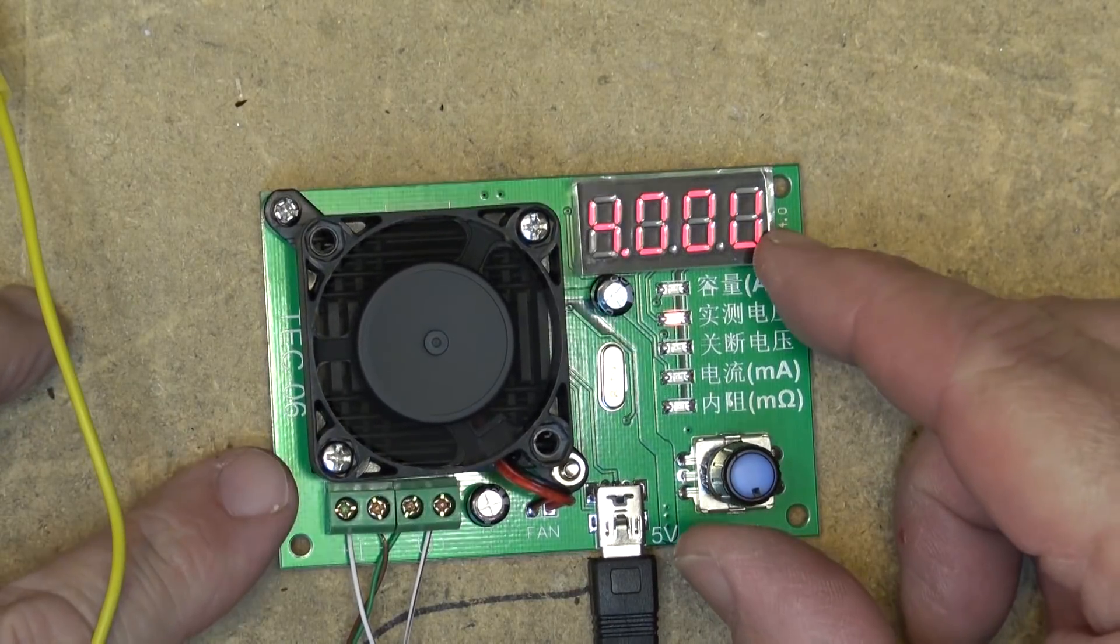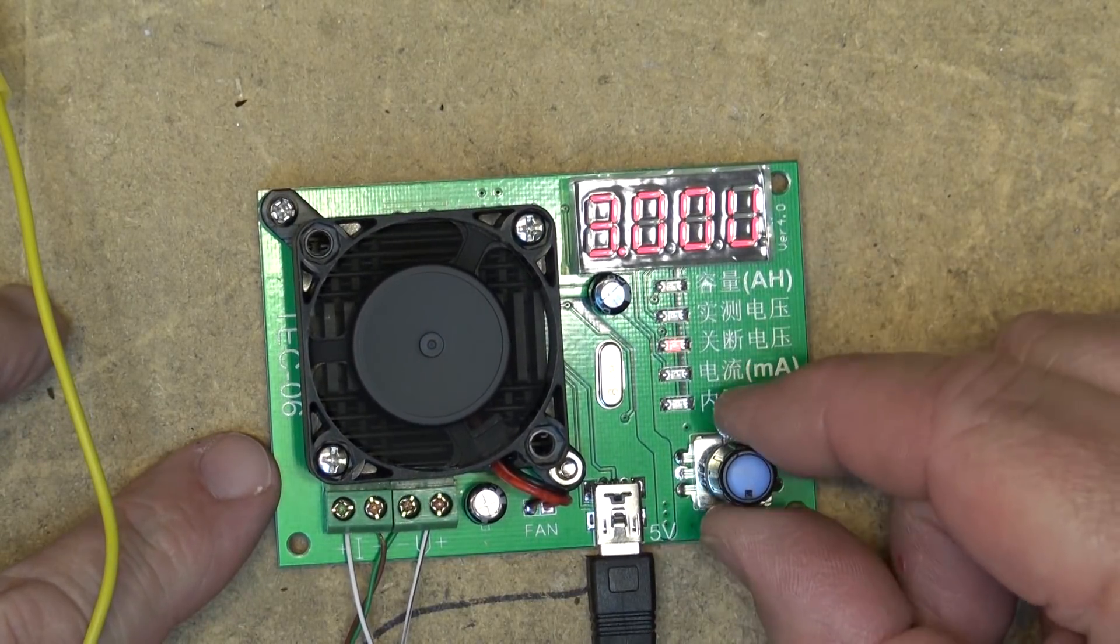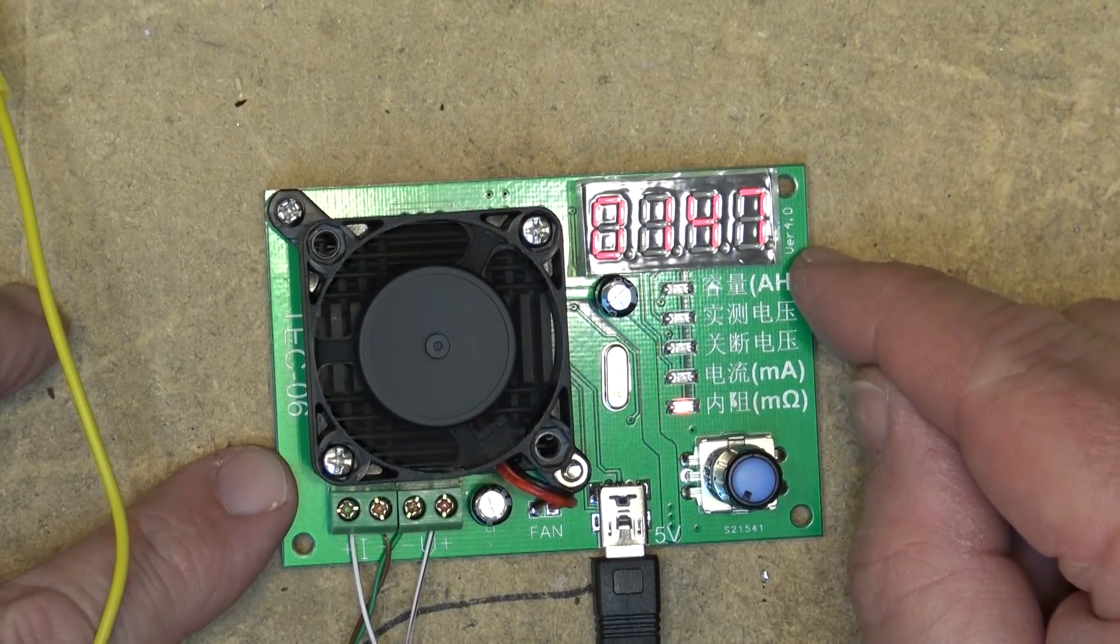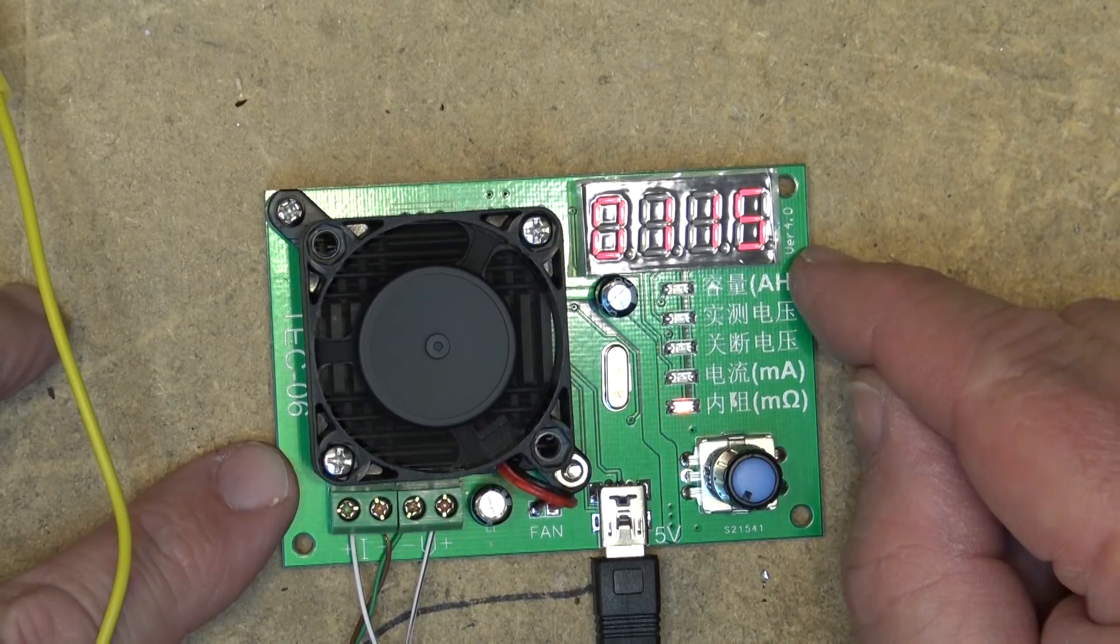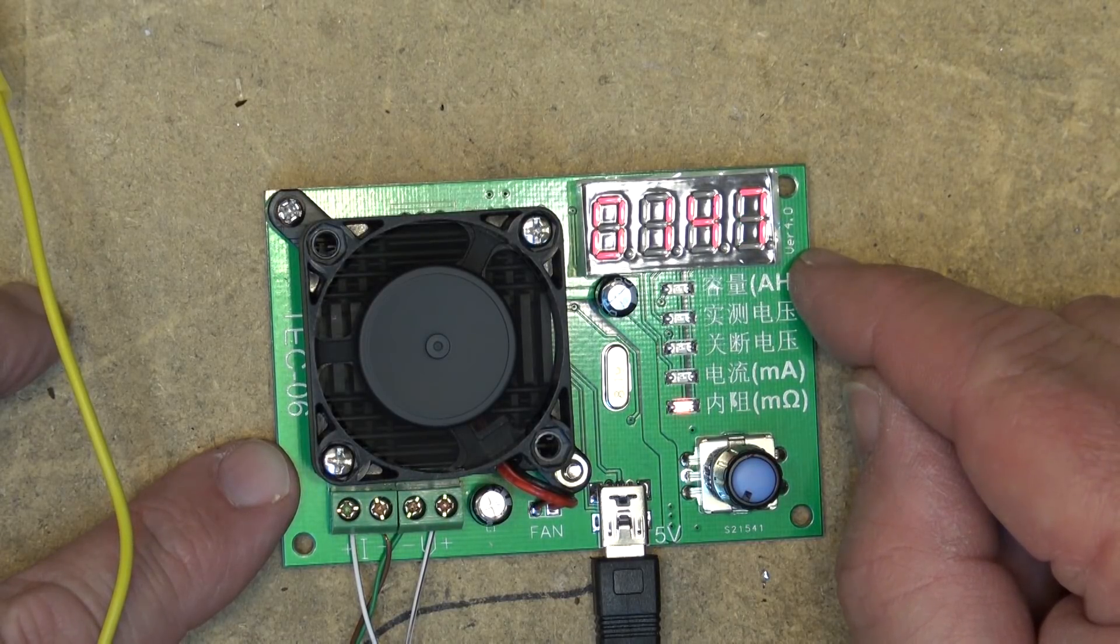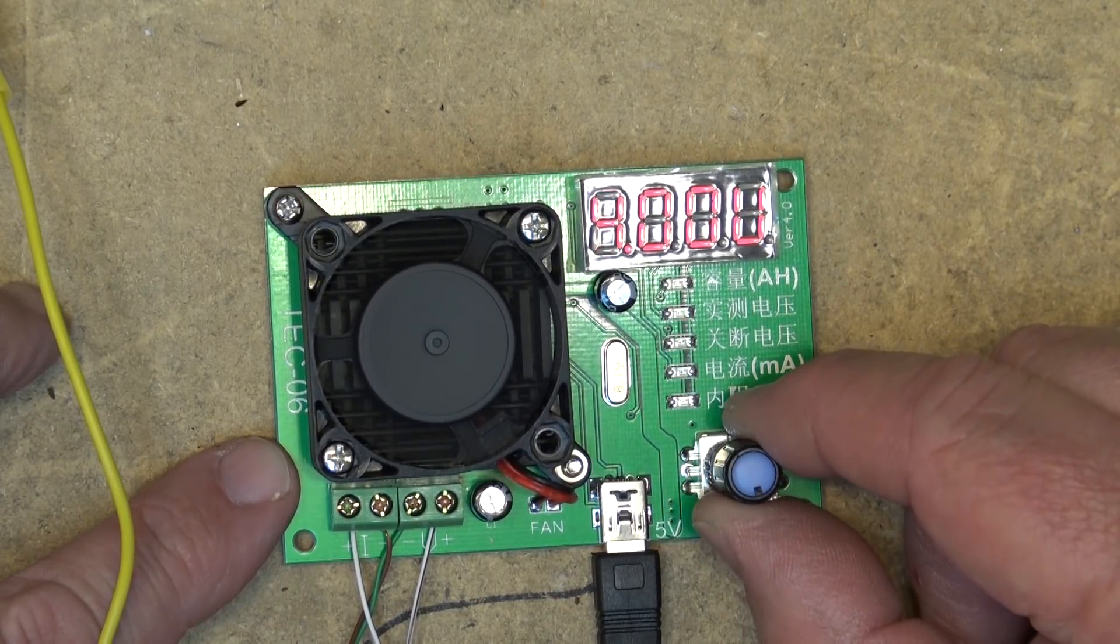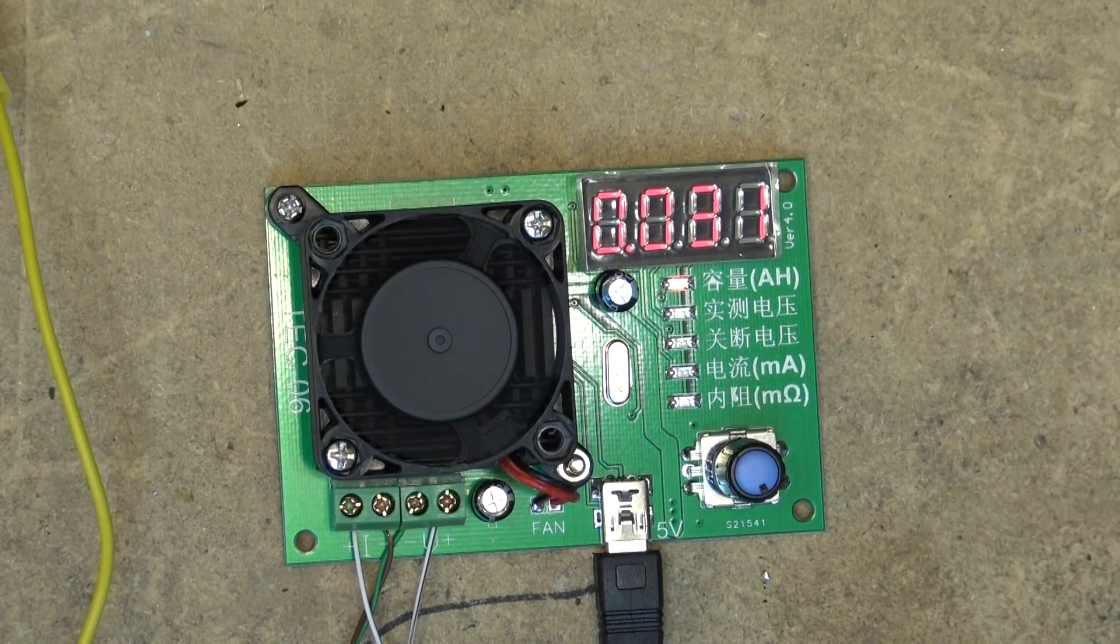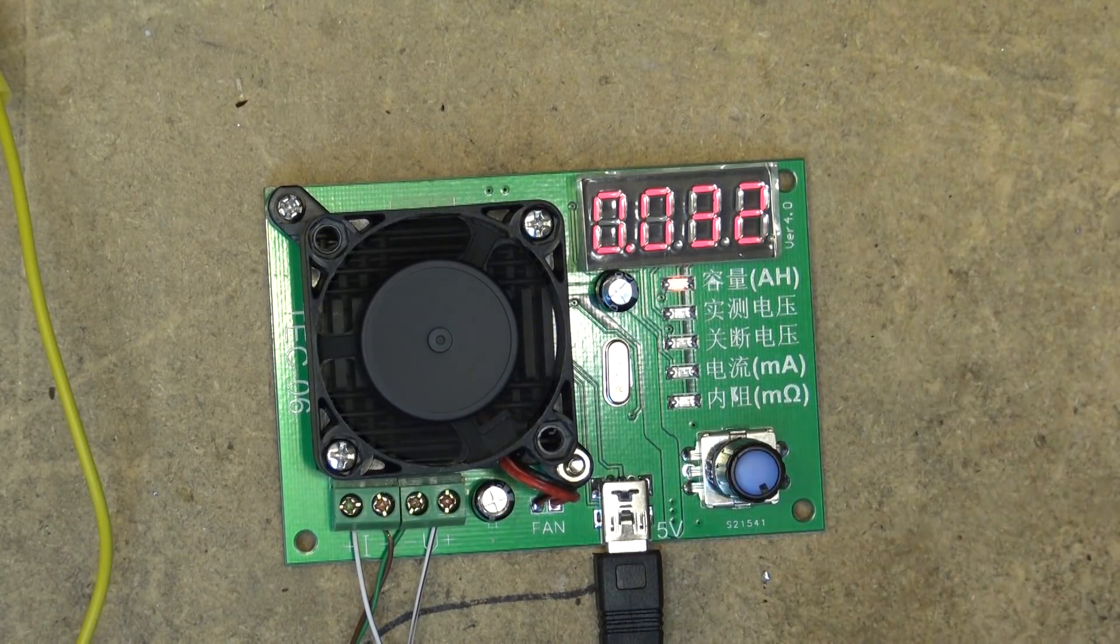Our voltage is at 4 volts now, it's going to shut off when it gets down to 3, and here's our internal resistance of the battery, the cell resistance. That's not the interesting one though, the interesting one is going to be the amp hours. So let's discharge this battery.